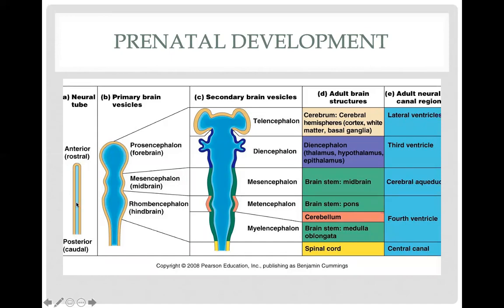Here is a depiction of what your brain looks like from embryonic all the way to an adult brain. We start with the neural tube, viewed from anterior to posterior — also known as rostral and caudal. Primary brain vesicles forming within the first four weeks create three major structures from anterior to posterior: prosencephalon (forebrain), mesencephalon (midbrain), and rhombencephalon (hindbrain). Within a week, the brain has significantly developed into its secondary brain vesicles.